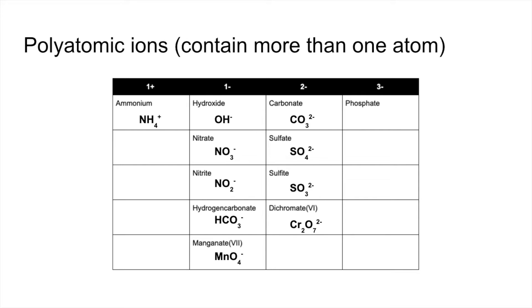And then finally, 3 minus ion we've got there is phosphate, which is PO4, 3 minus. Obviously, there are more than these polyatomic ions, but these are the most common ones that I see in A-level. So definitely worth learning these.